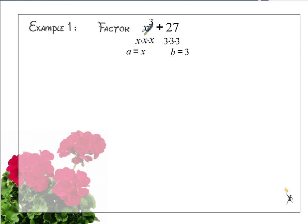So if I want to find a and b, I can take the cube root of each term in my sum of cubes. Once I know what a and b are, x and 3, I can take that x and the 3 and I can factor this sum of cubes really quickly and easily.